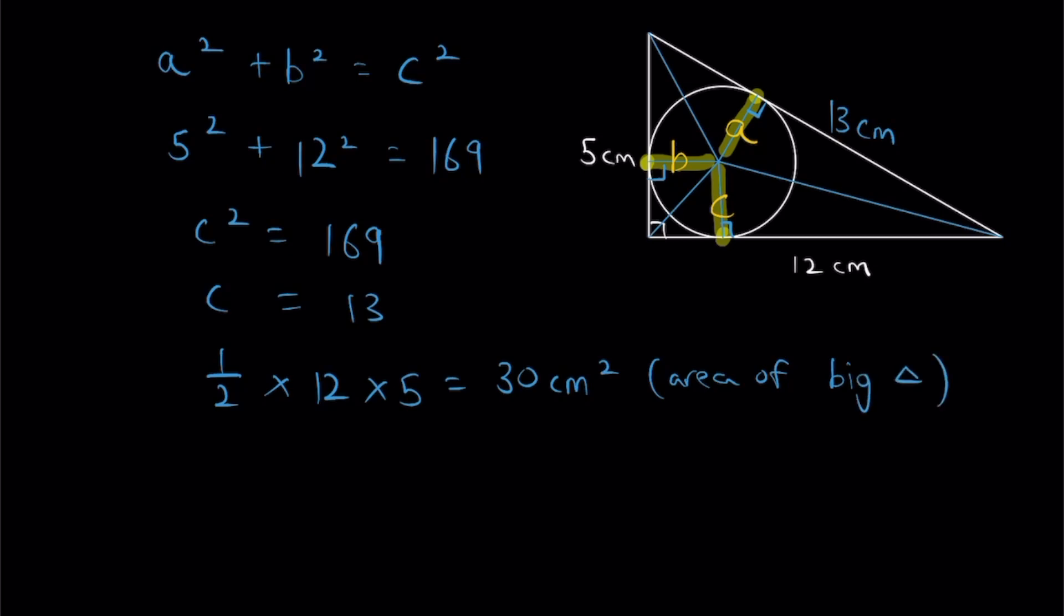And if you notice here, I've split the big triangle up into three smaller parts, which means if I add the area of the three smaller parts together, I should get back my area of the big triangle. And that's exactly what I'm going to do.